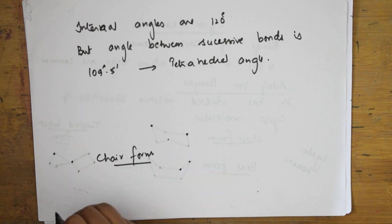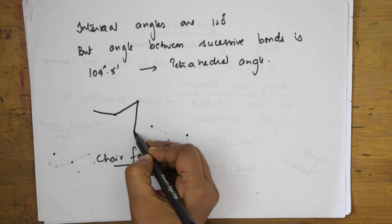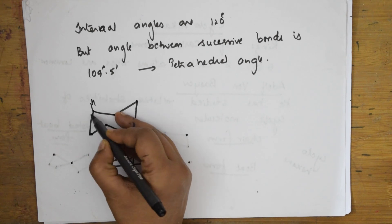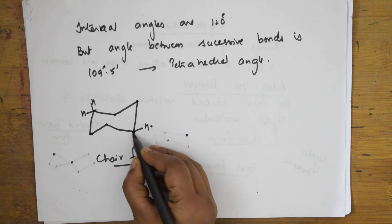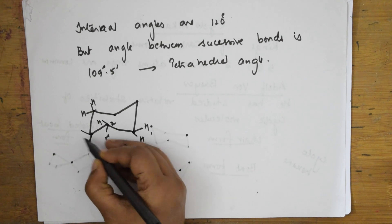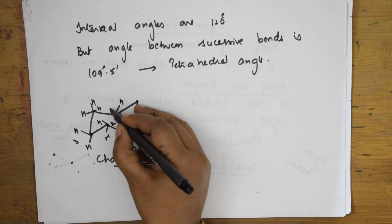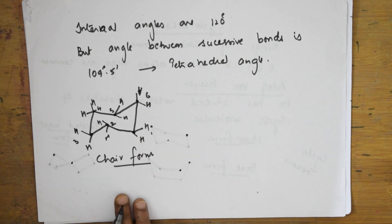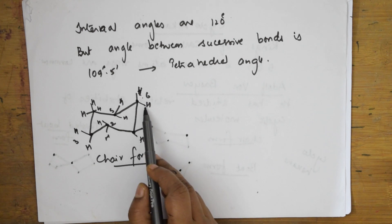When drawing the chair form of cyclohexane, we fill in the hydrogens — one hydrogen at each of the six carbon positions. In this chair form, the hydrogens are classified as axial hydrogens and equatorial hydrogens.